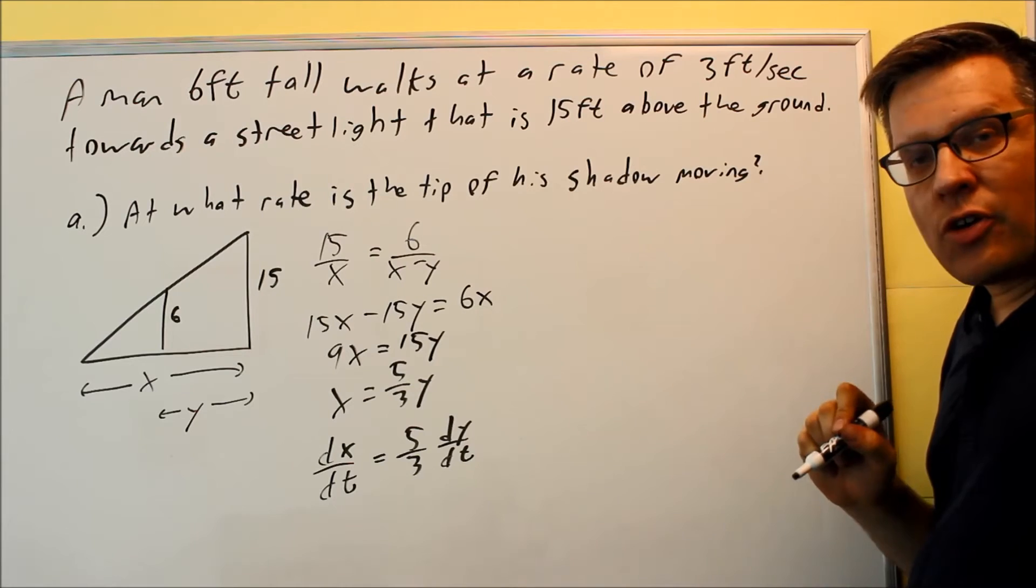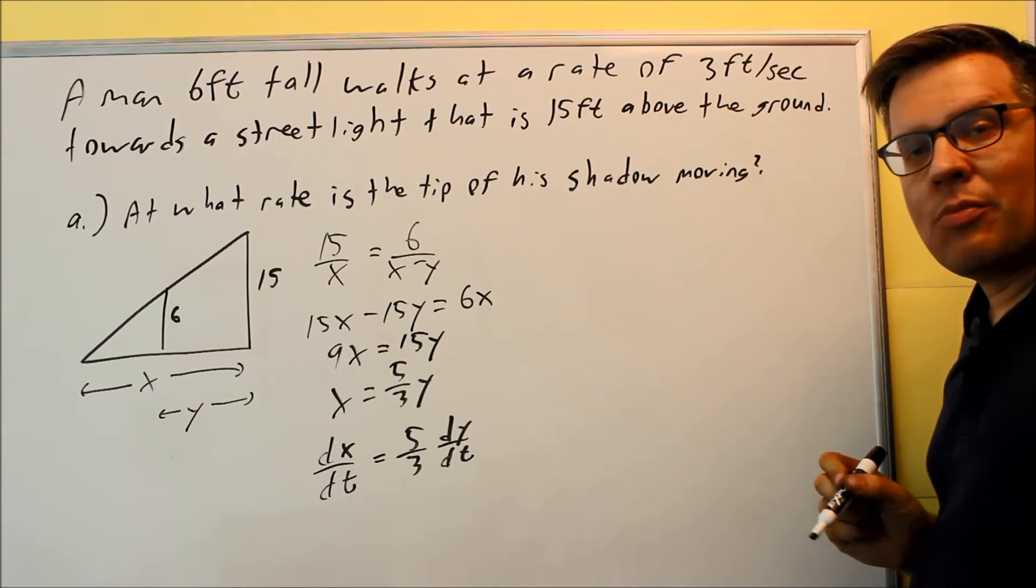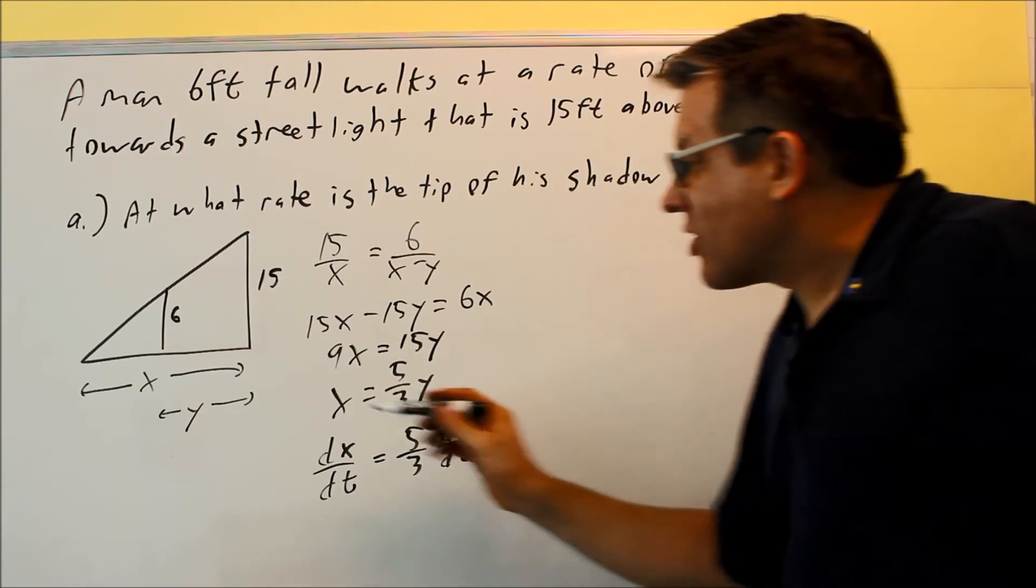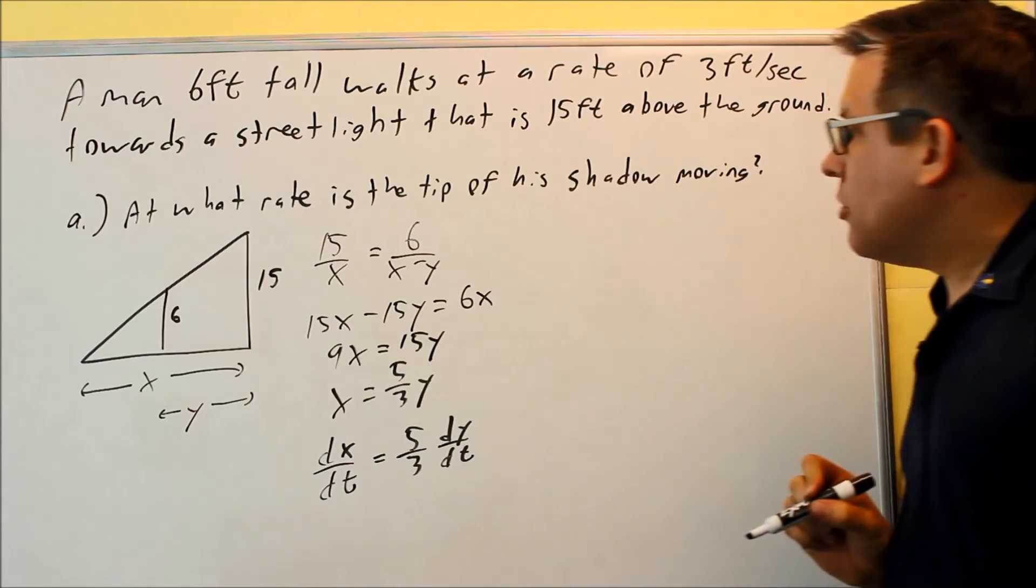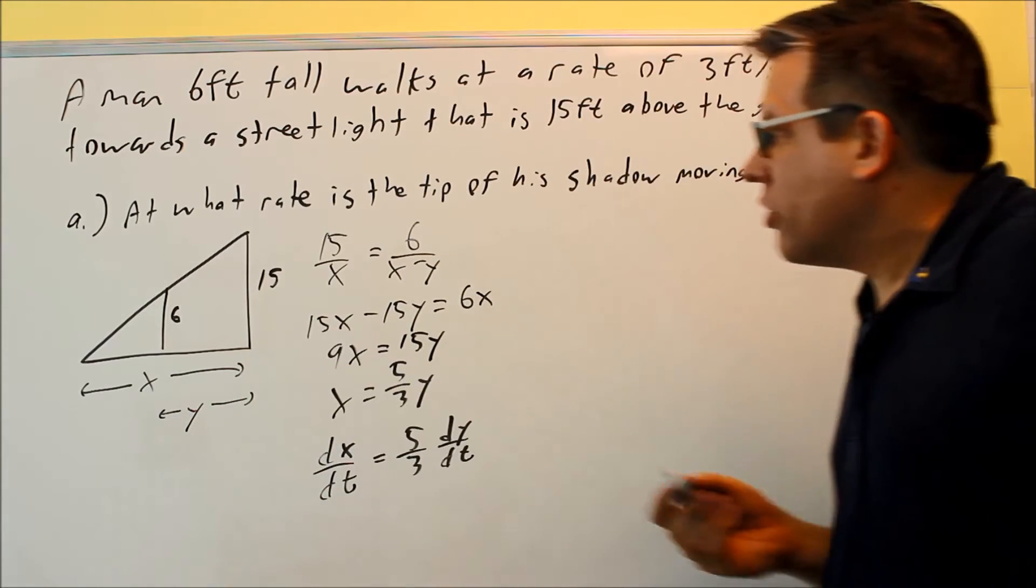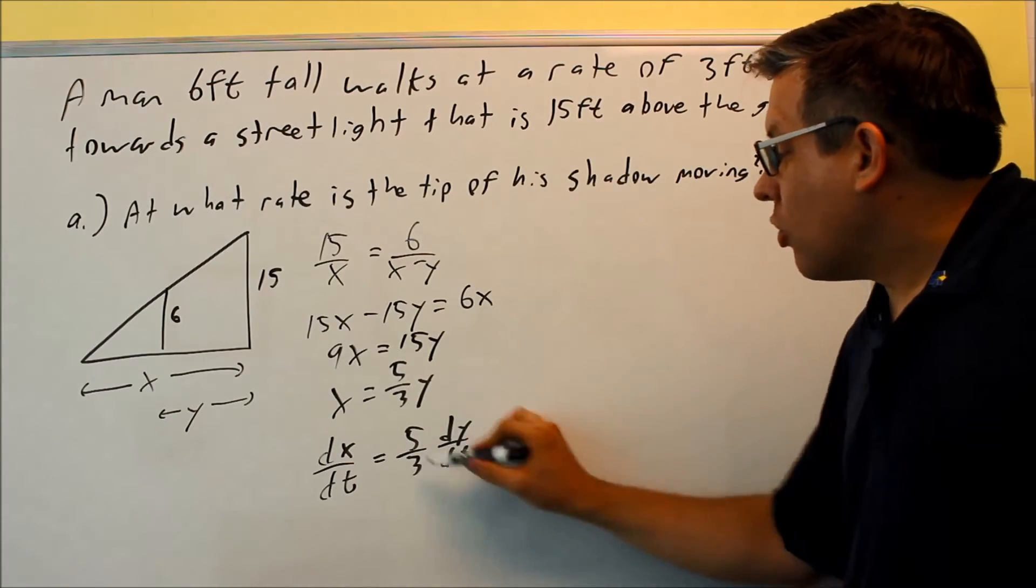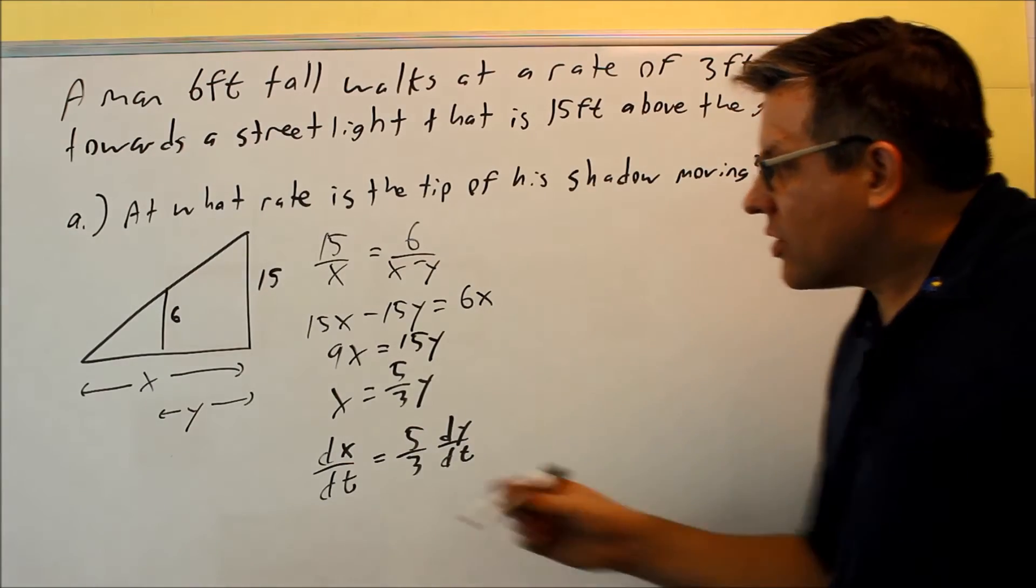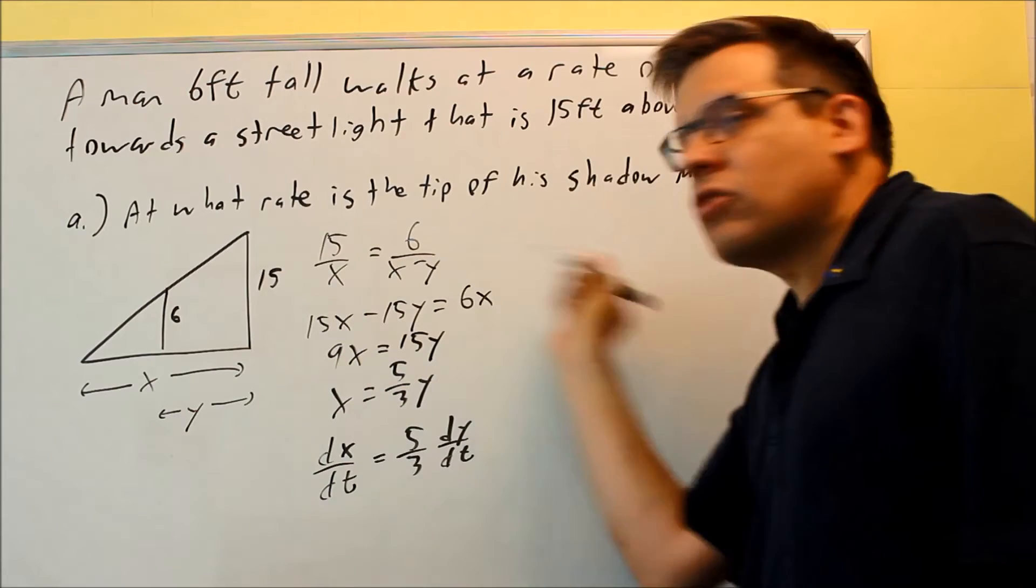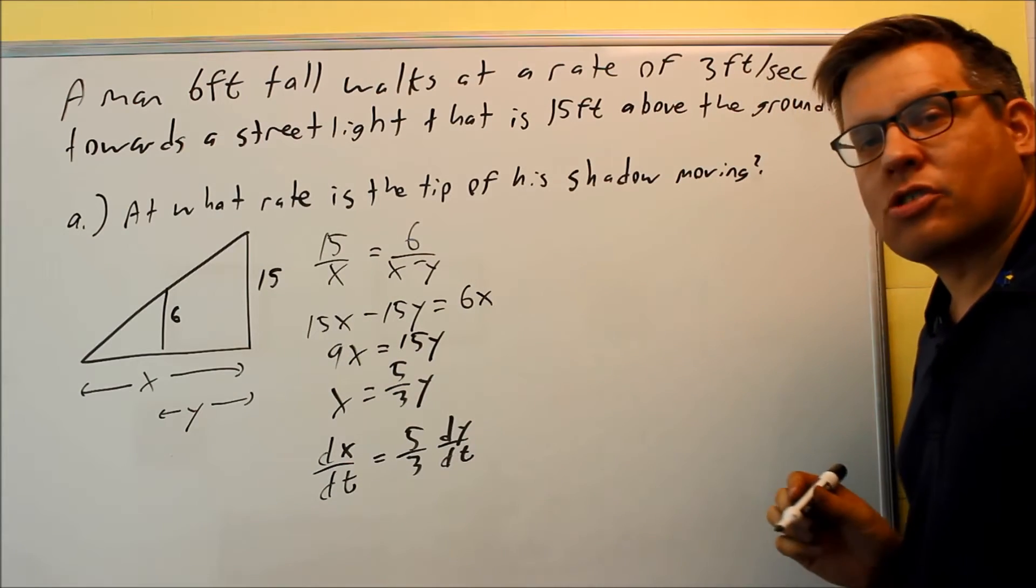It says that man's walking at a rate of 3 feet per second. We had to set up our variables first before we knew what dimension that was. That's going to be dy dt because that's his distance from the street light that he's moving. So that 3 is going to go right in here for dy dt. And since I have it set up this way, he's moving to the right. That means that that dimension should be positive.